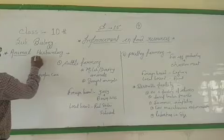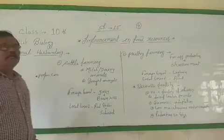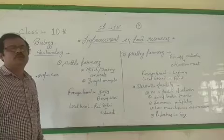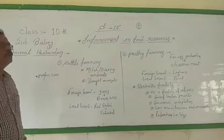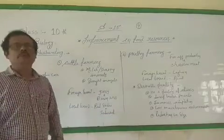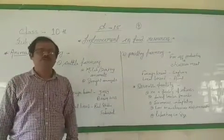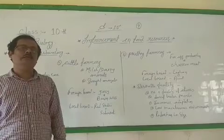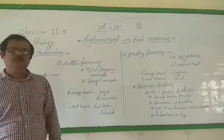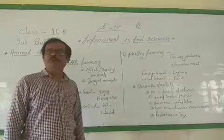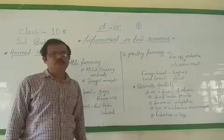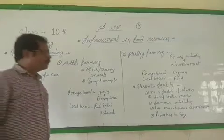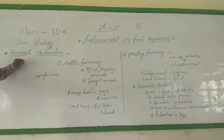Agriculture includes crop production and also rearing of animals. This is also known as animal husbandry. Animal husbandry means rearing of different types of animals for obtaining various types of food and also for different products. In the same way we all care for animals with great care. We will study the processes by which we obtain more and more food material from animals.